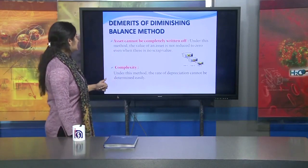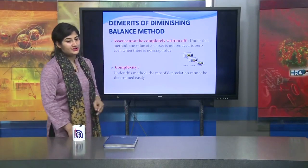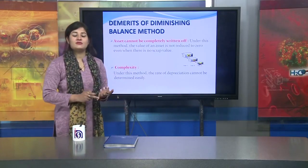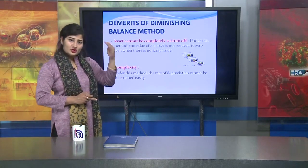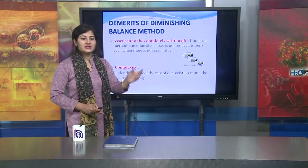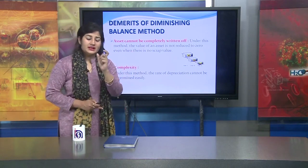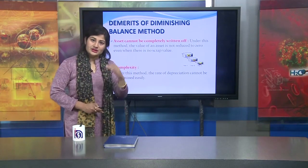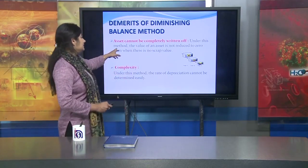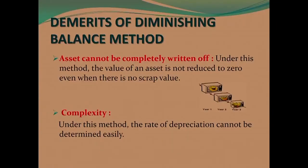The demerit of the Diminishing Balance Method is that the asset cannot be completely written off. The value is never able to reach zero because depreciation is always calculated on a diminishing value. Under this method, the value of the asset is not reduced to zero even when there is no scrap value. In SLM, if you charge a fixed amount over 10 years, the value becomes zero — but not under the Diminishing Balance Method.